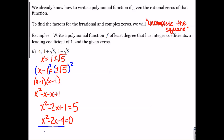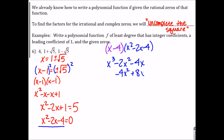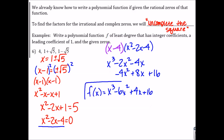We know that our other zero is 4, which means our other factor is x minus 4. We're going to multiply those two factors together to get our polynomial. If we distribute the x to the quadratic, and then distribute the negative 4 to the quadratic, and combine our like terms, we end up with our function. You can check your answers by plugging that cubic into the app and seeing if you get the correct roots.